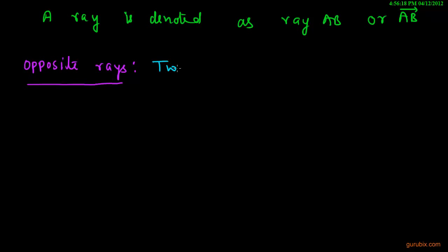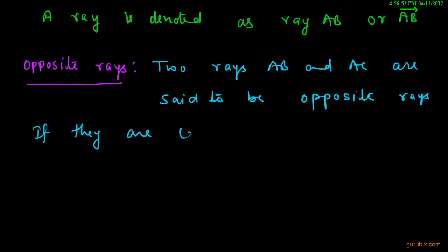Now let us learn something about opposite rays. We can define it like this: two rays AB and AC are said to be opposite rays if they are collinear and point A is the only common point of the two rays.